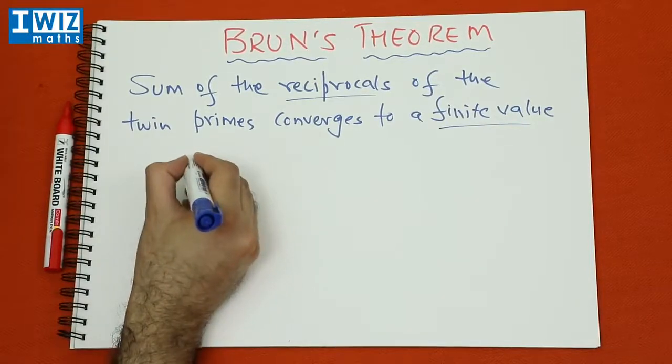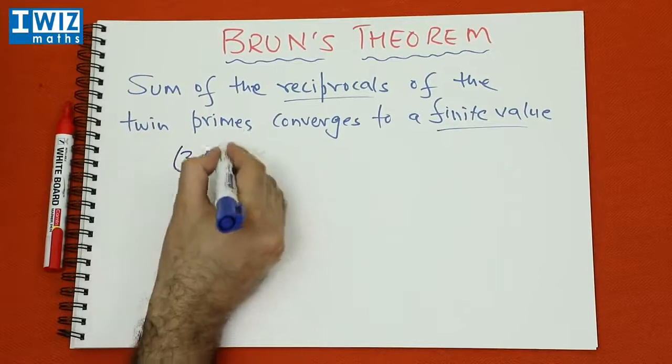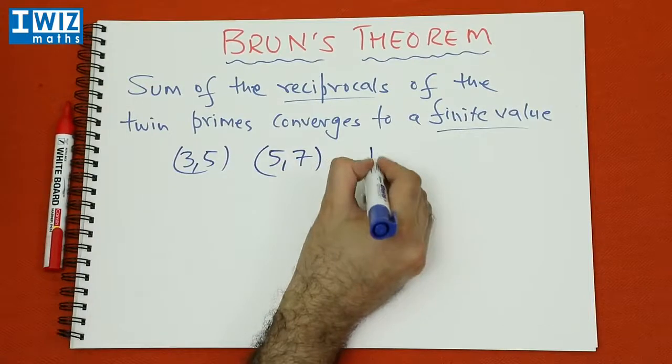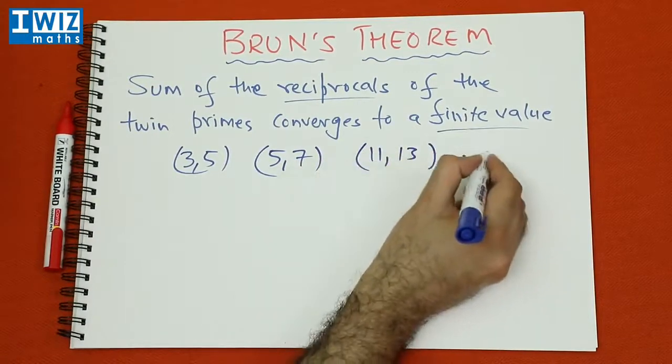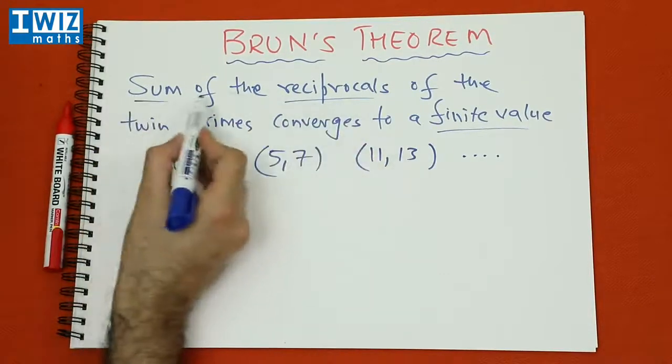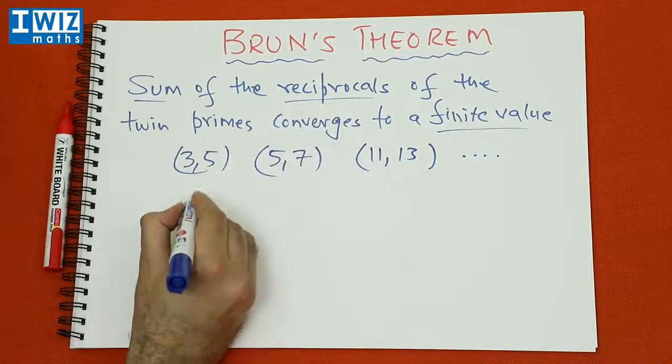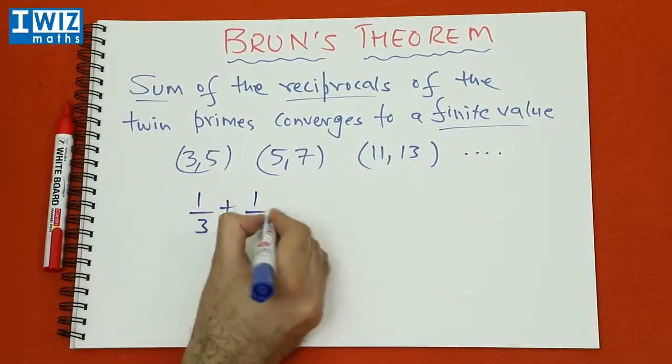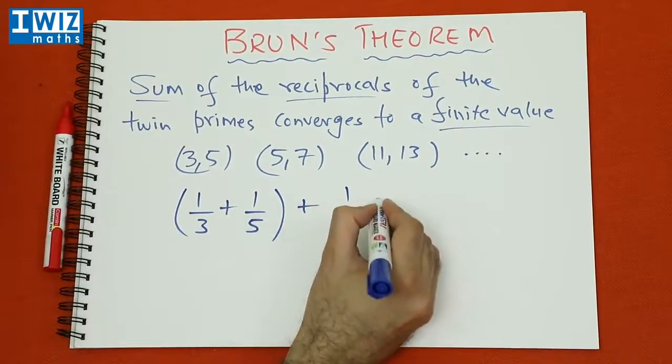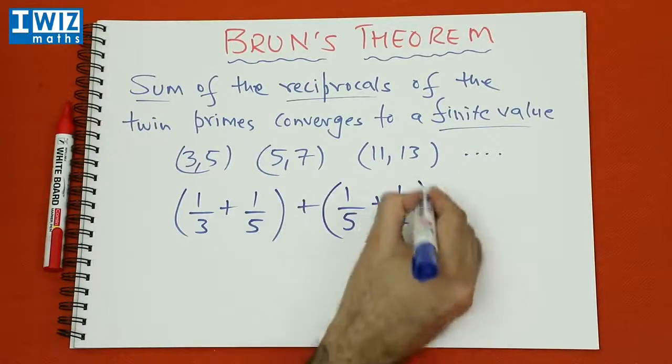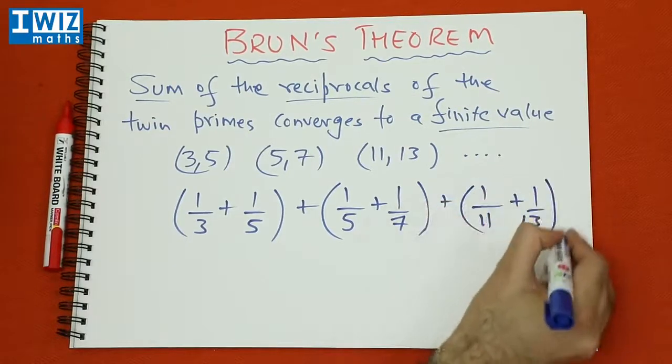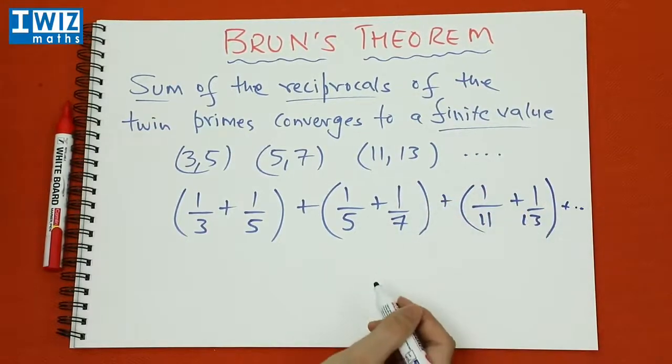So that's the key ingredient of the theorem and essentially what it says is the following. So if we consider the first couple of twin primes, just as an example, so you have 3, 5, you have 5, 7, you have 11 and 13 and so on and so forth. Now you are meant to consider the sum of the reciprocals. So if you consider 1 upon 3 plus 1 upon 5 plus 1 upon 5 plus 1 upon 7 plus 1 upon 11 plus 1 upon 13 and so on and so forth.